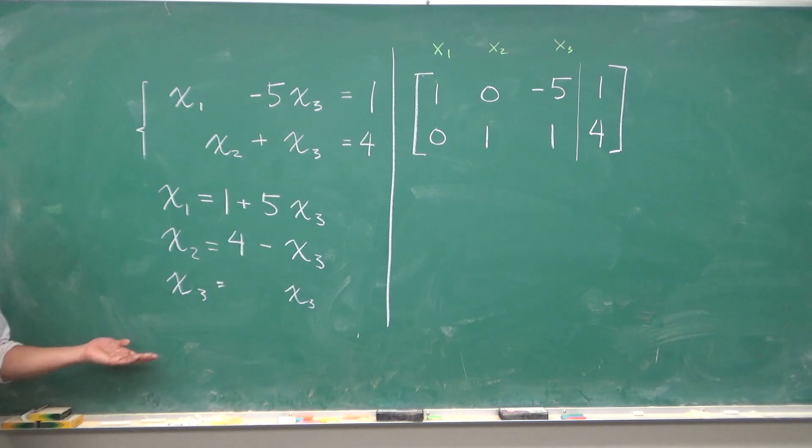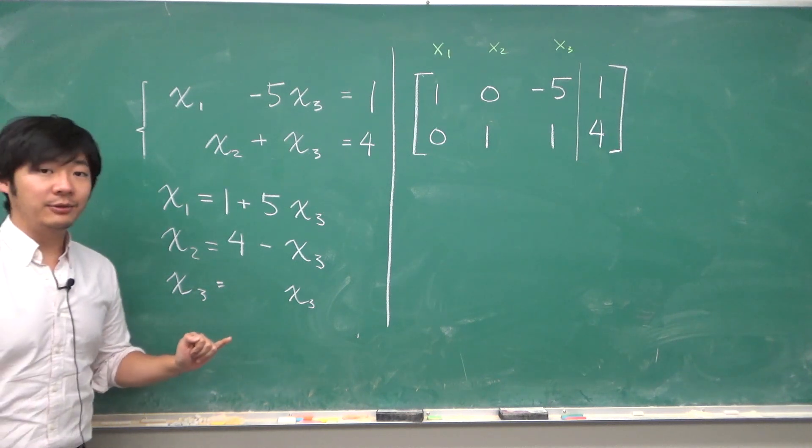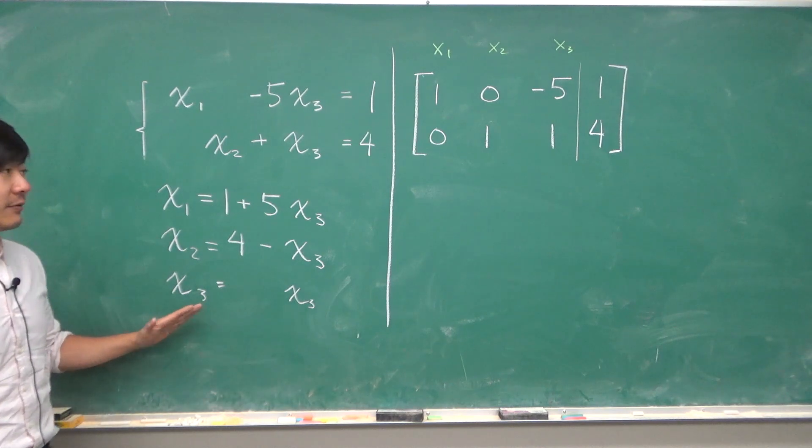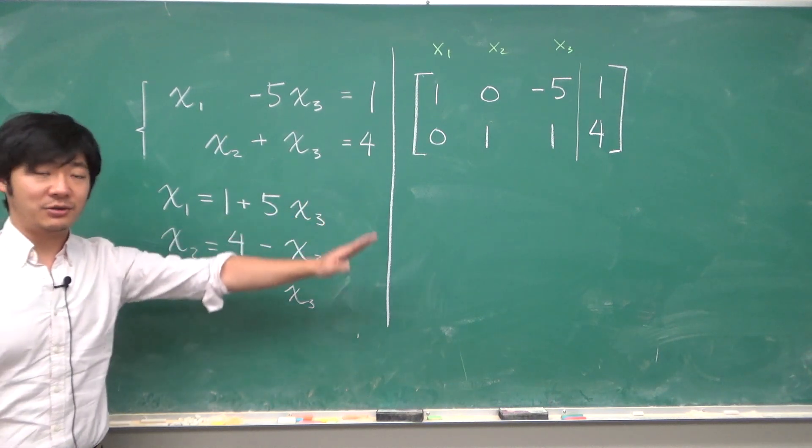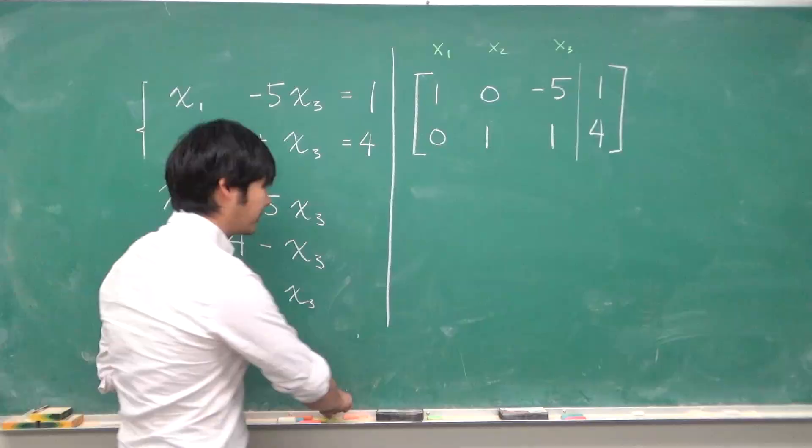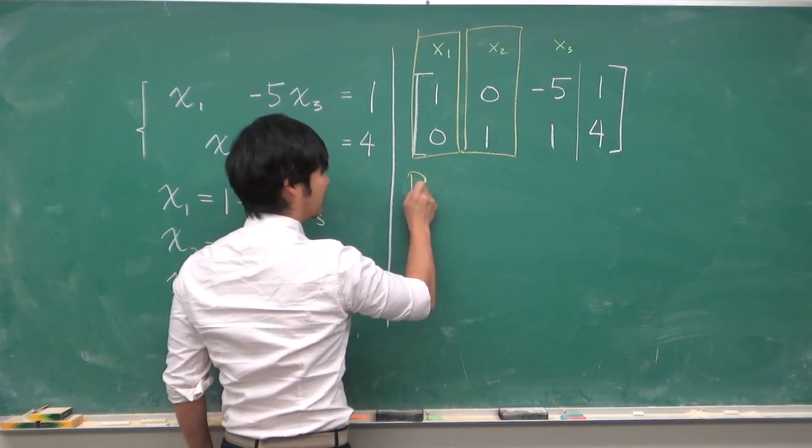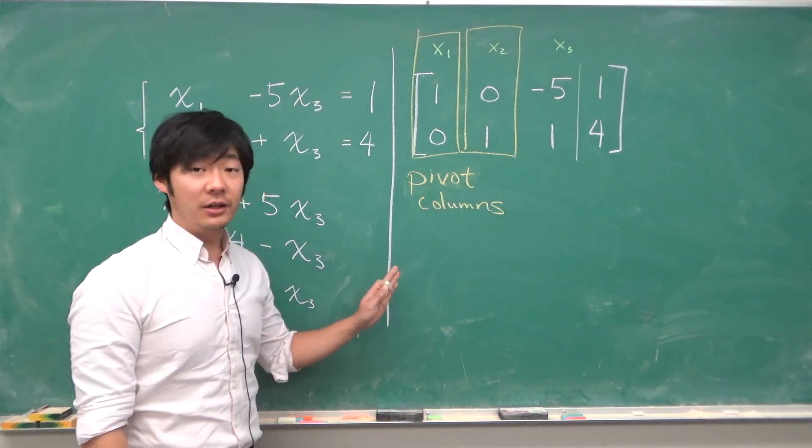For different values for x3, it would give us different values of x1 and x2. How can we get to this from looking at the augmented matrix? We have our pivot columns.